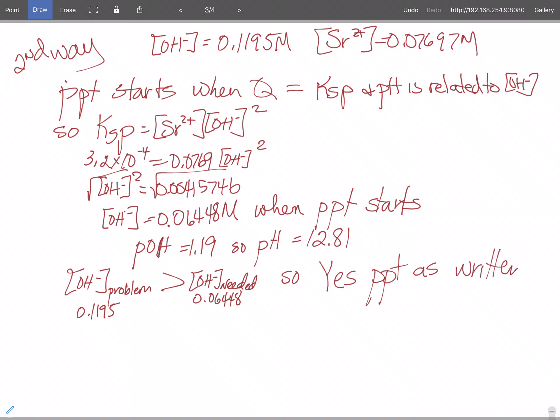But we know what the pH is. So pH less than 12.81, precipitation will stop.